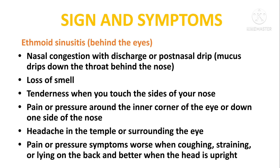Signs and symptoms of ethmoid sinusitis — behind the eyes: nasal congestion with discharge or post-nasal mucus drip down the throat behind the nose, loss of smell, tenderness when touching the side of the nose, pain or pressure around the inner corner of the eye or down one side of the nose, headache in the temple or surrounding the eyes. Pain or pressure symptoms are worse when coughing, straining, or lying on the back, and better when the head is upright.